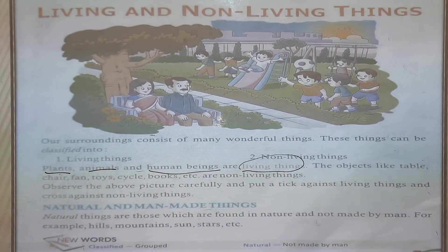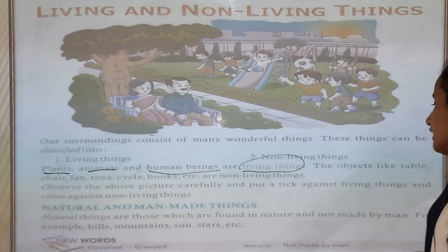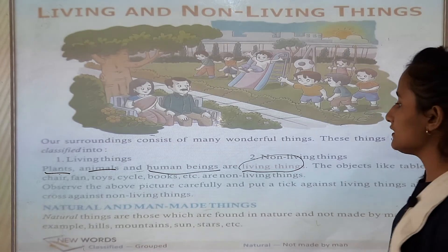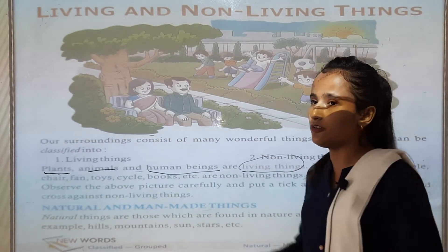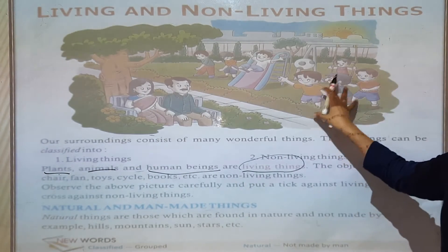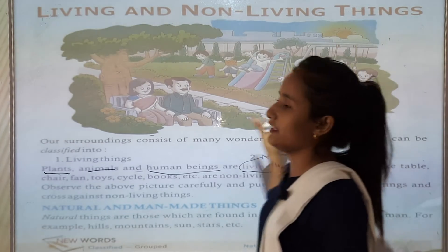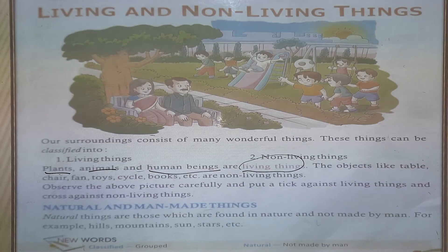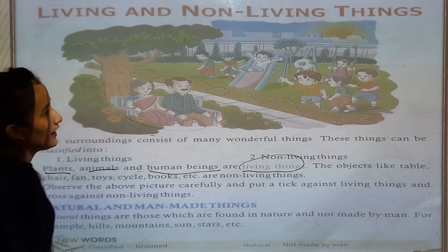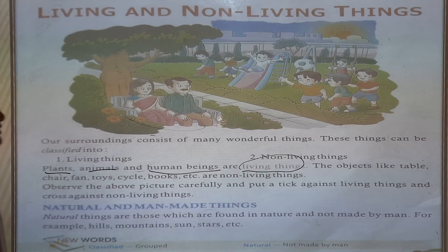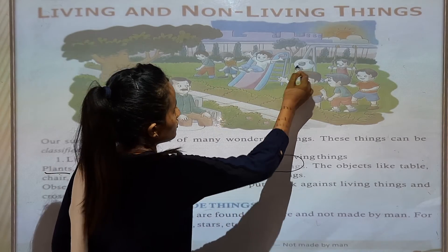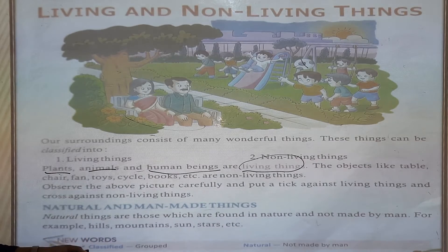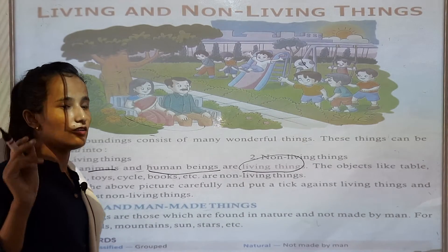Observe the above picture carefully and put a tick against living things and a cross against non-living things. You can observe the pictures carefully. Cross against the non-living things. Which are the non-living things? You can see — toy, ball is a non-living thing. Like this, you have to put a cross on non-living things.